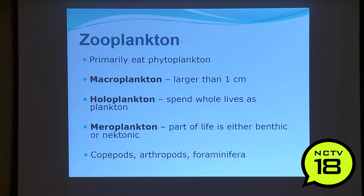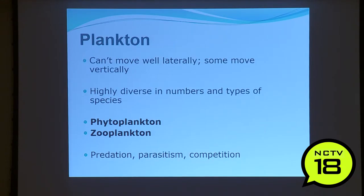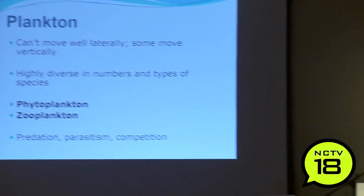Scallops are a good example of meroplankton — going from spat, which is planktonic, through the veliger stage to a small scallop living on eelgrass to a larger scallop that can self-propel. Copepods, arthropods, and forams are other examples. Plankton can't move very well laterally — some dinoflagellates can spin and move a bit, and some can migrate vertically, but they're not known for their movement. They're very diverse in number and types of species.